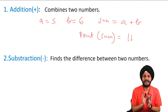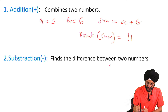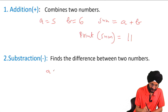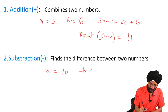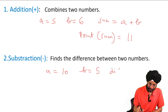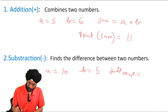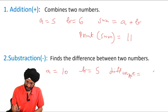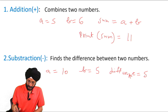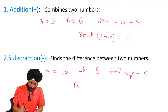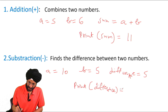Then subtraction — this is another arithmetic operator. It finds the difference between two numbers. If we have a equal to 10 and b equal to 5, then the difference is 10 minus 5. We can calculate it using the print function and the output will be 5.